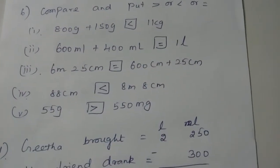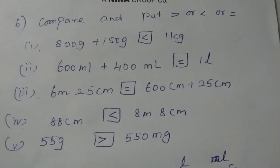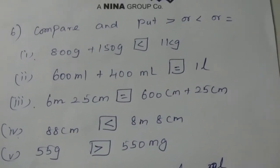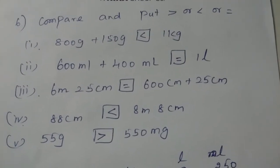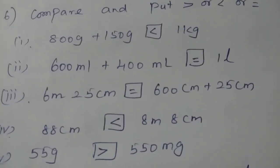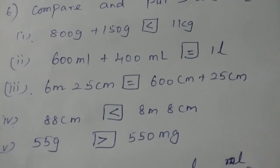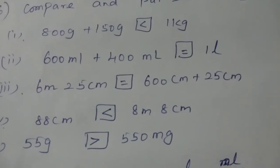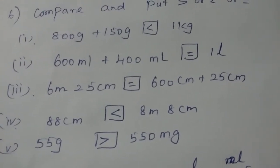Good morning students. Today we are going to discuss exercise 2.1, the 6th Roman letter. The question is compare and put greater than, less than, or equal to. The first question is 800 grams plus 150 grams. In the right hand side you can see it is 1 kilogram. If you add these two you will be getting 950 grams which is less than 1 kilogram.